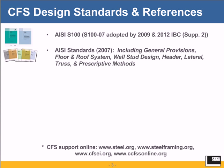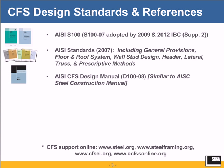The AISI standards, several of which are adopted by the code, are also used for cold-formed steel framing. These include general provisions, floor and roof system standard, the wall stud design standard, the header design standard, the lateral design standard, truss, and prescriptive methods.